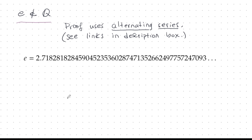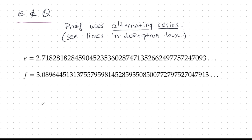There it is — I'm sure you've seen this number before. E is named after Euler, in his honor. You look at these digits and they seem to be not repeating, so you think it looks irrational. But have a look at this number, F. Is this rational or irrational? It looks really irrational — nothing is repeating. But it turns out that this is a rational number: 1,999 over 647.